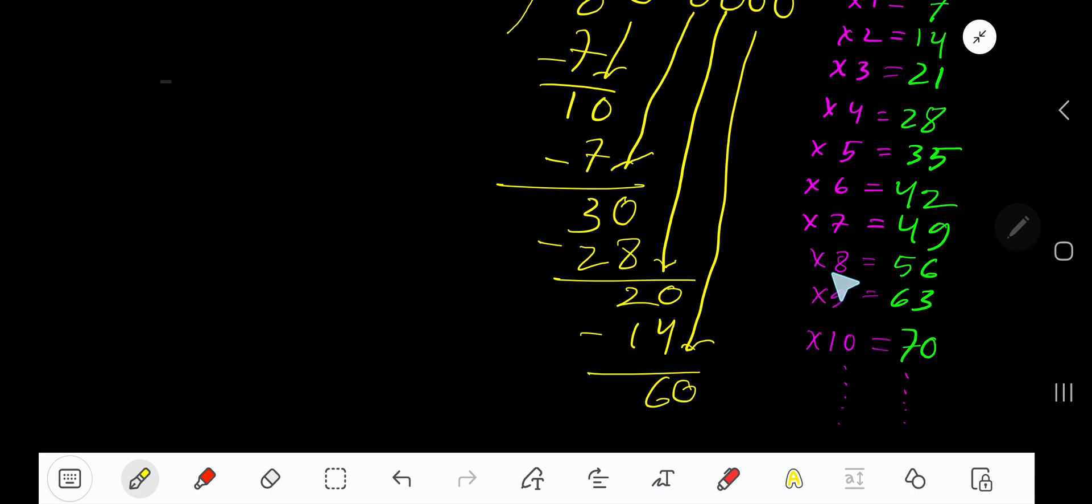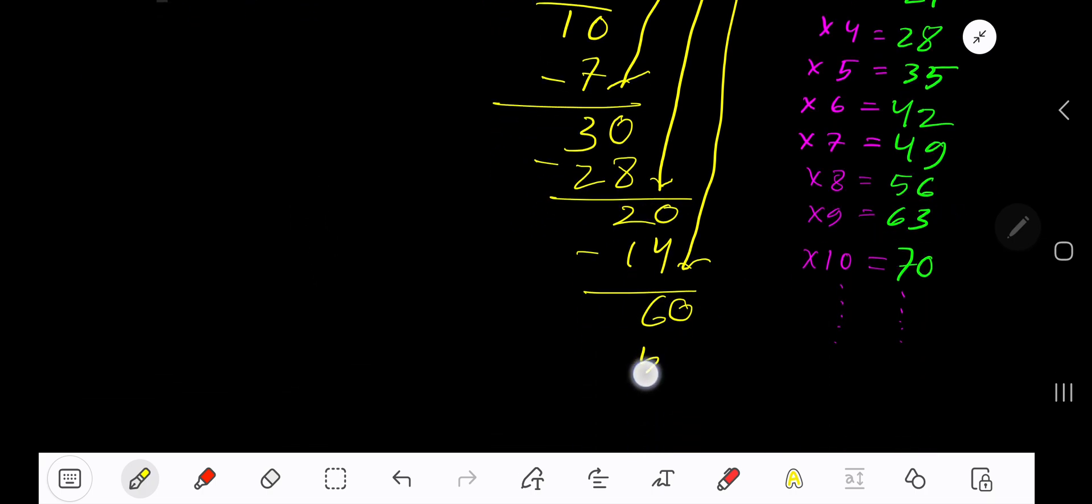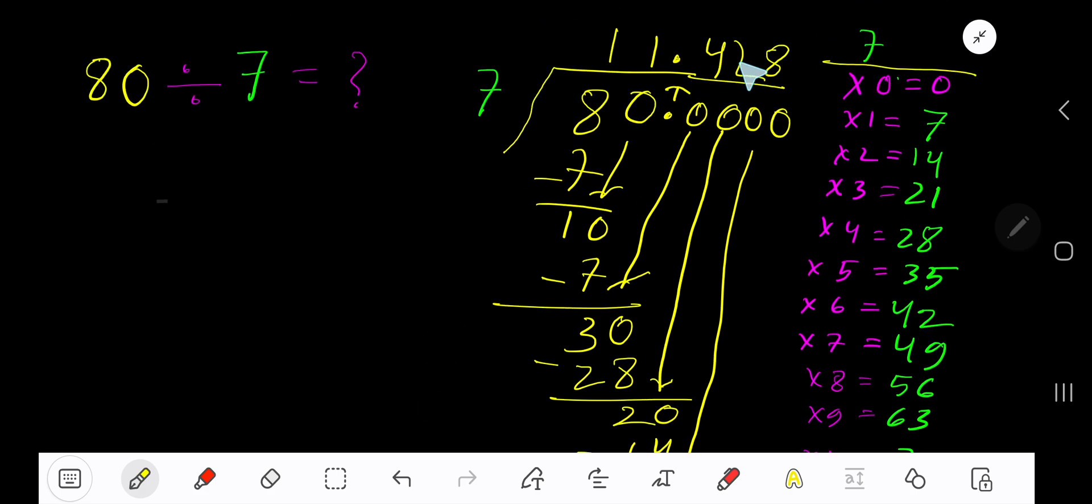63 which is greater, so 8 times. 8 times 7 that gives you 56. Subtract, you are getting 4. You can bring down more zeros, but since we have gotten three places after decimal, so just place here three dots.